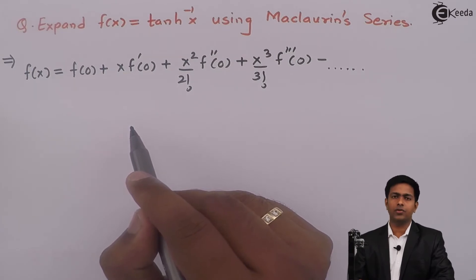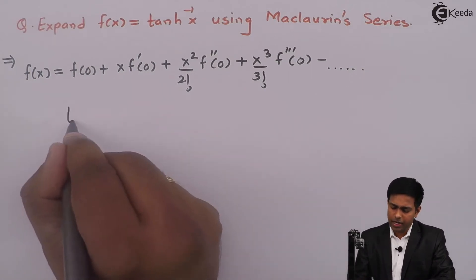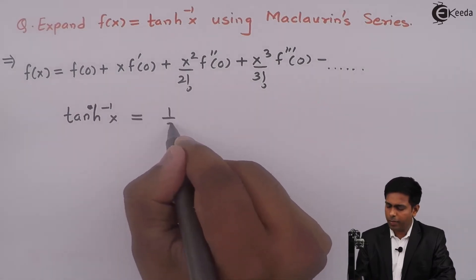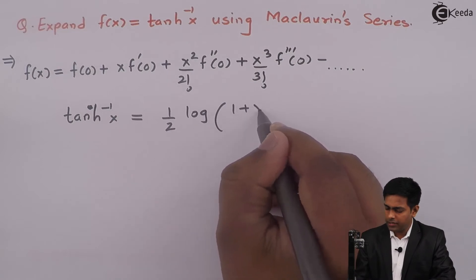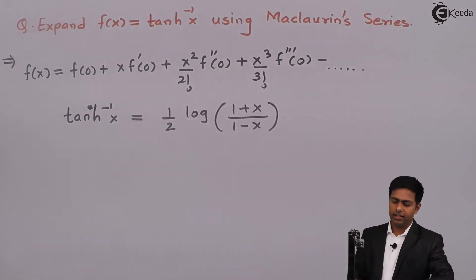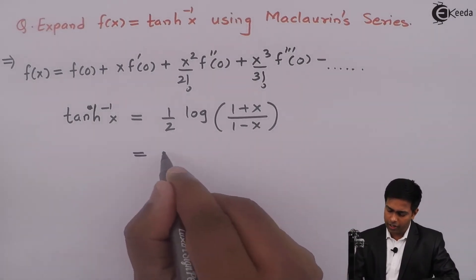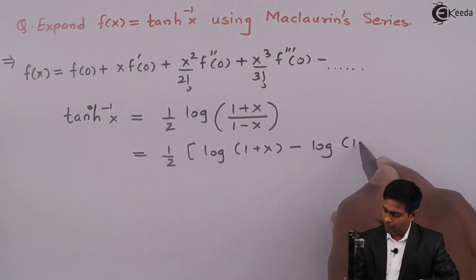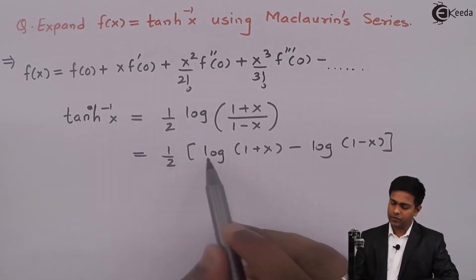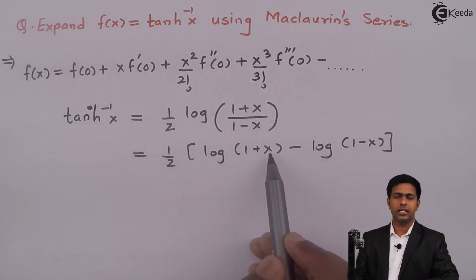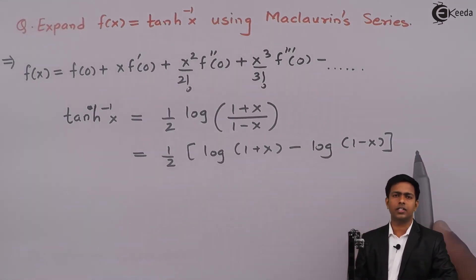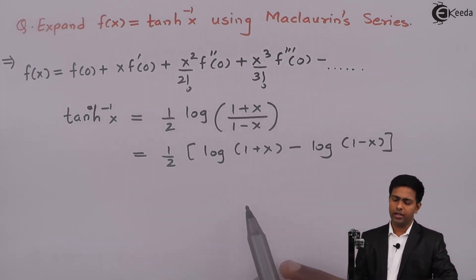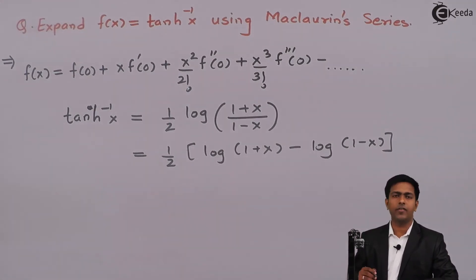We can use the formula: tanh⁻¹x = (1/2)·log((1+x)/(1−x)), which equals (1/2)·[log(1+x) − log(1−x)]. In this formula we already know the Maclaurin series for log(1+x) and log(1−x), so we'll directly substitute those series to get the expansion of hyperbolic tan inverse x. This will save our time.